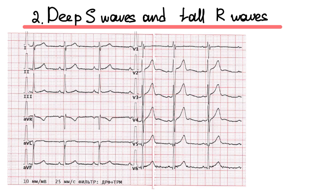Deep S waves and tall R waves at chest leads — we often see these ECG changes in young people. And of course, when we see this ECG, we might think about left ventricular hypertrophy. But it's not — it's a normal ECG. We use hypertrophy voltage criteria only for people older than 35 years old.